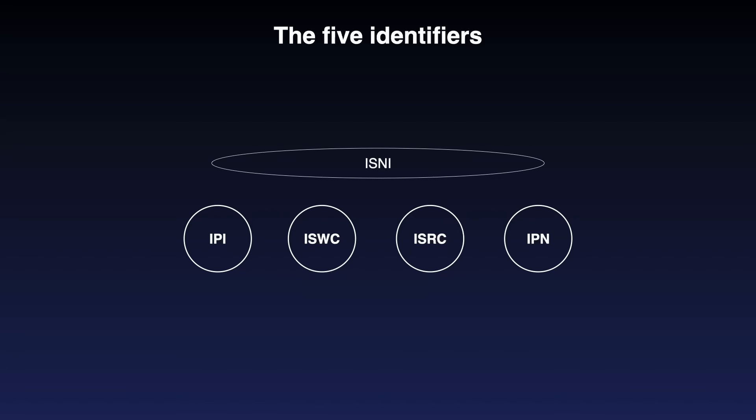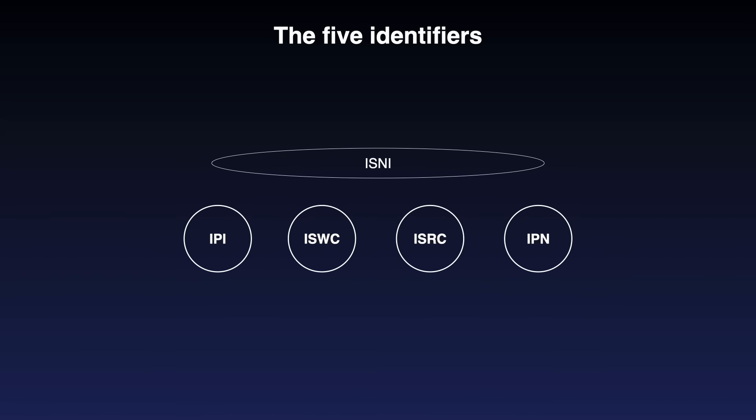To get an ISRC, we need people to perform. We identify performers — singers, producers, whatever — because they deserve money as well. They have IPNs in some parts of the world: International Performer Number. And as an umbrella for countries that don't use all identifiers, we have ISNI — International Standard Name Identifier — as an umbrella for all of these.